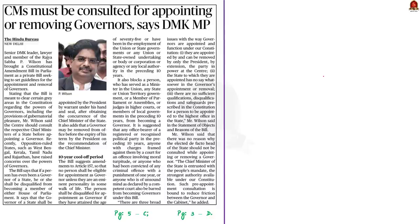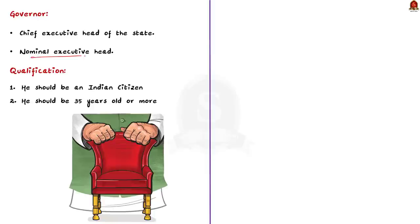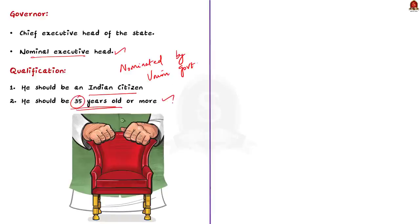This next news article talks about a private bill introduced in parliament — a constitutional amendment bill which seeks to get guidelines for the appointment and removal of governors. Governor is the nominal executive head of the state and forms an important part of the state executive. The central government nominates the governor for each state. The qualifications to become a governor are only two: he or she should be an Indian citizen, and should be 35 years old or more. No other criteria or minimum qualifications are laid out.